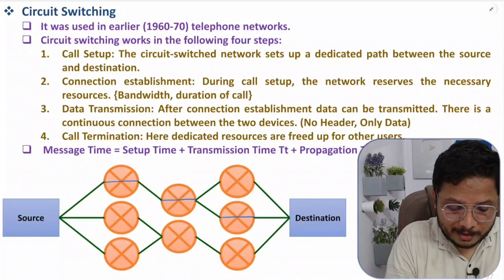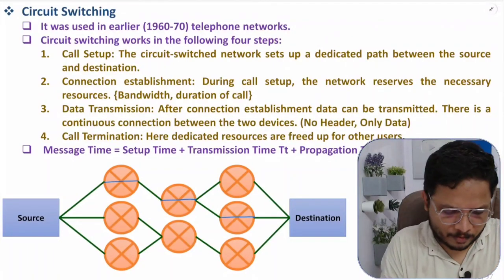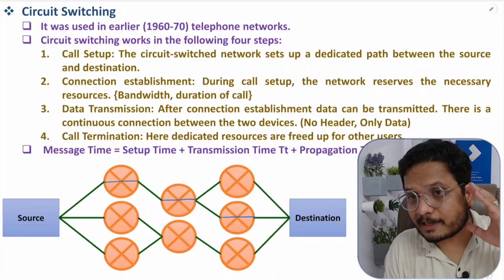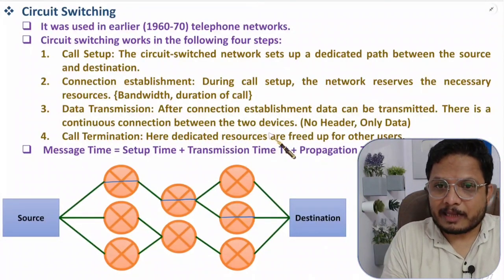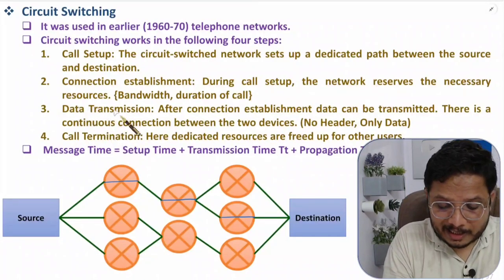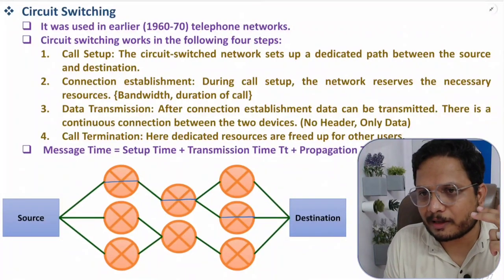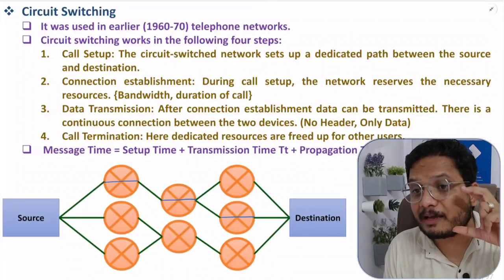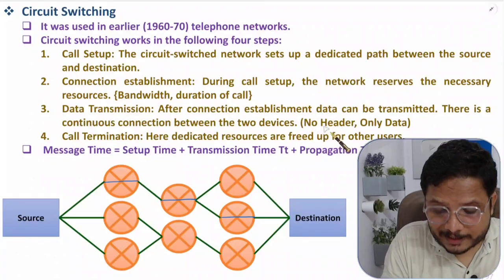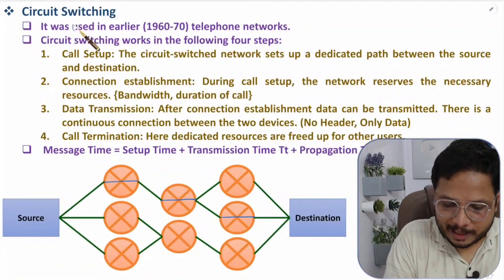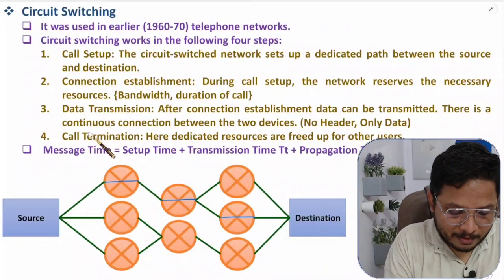Once the connection is provided, data transmission can happen. In the 1960s and 1970s this was usually a voice call. Note that in circuit switching there is no header — unlike IPv4 and IPv6 where we have additional header information. In circuit switching only the data is there, and after completion of data transmission there is call termination.